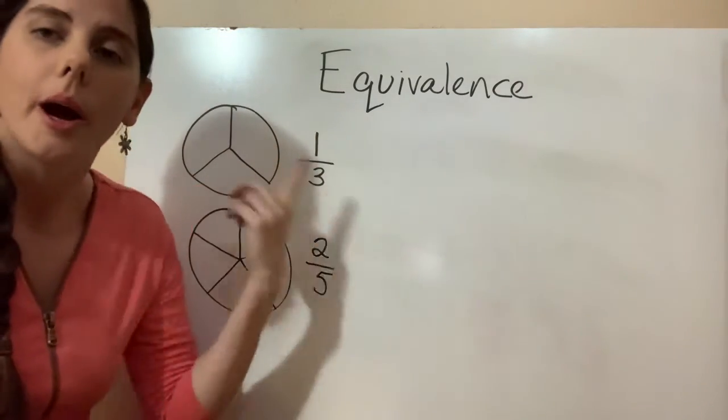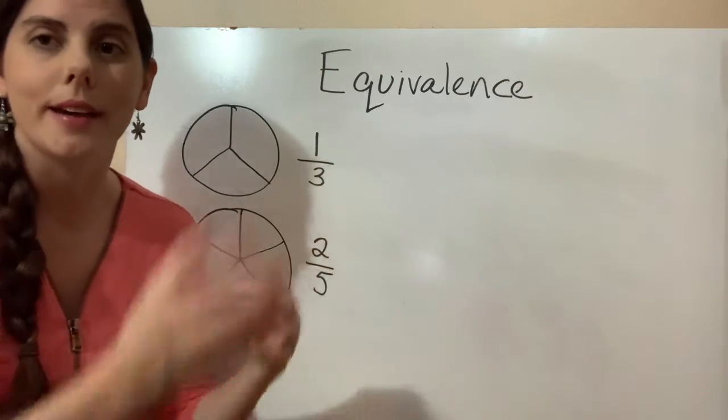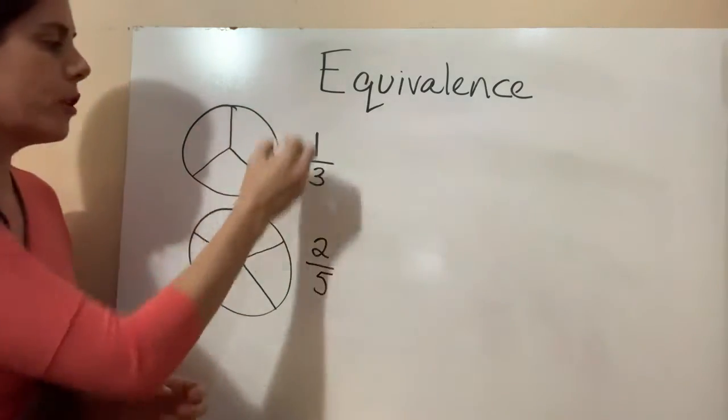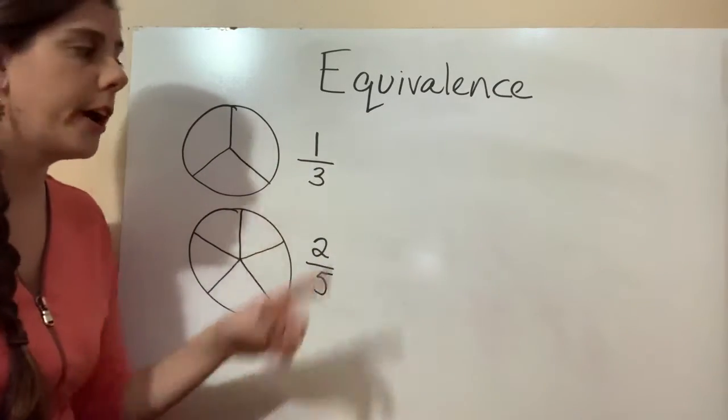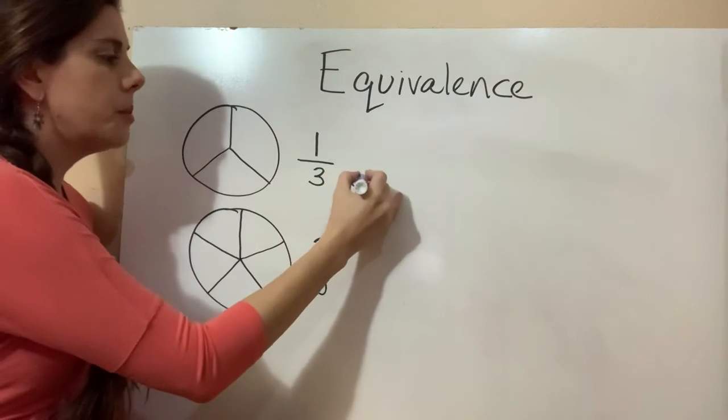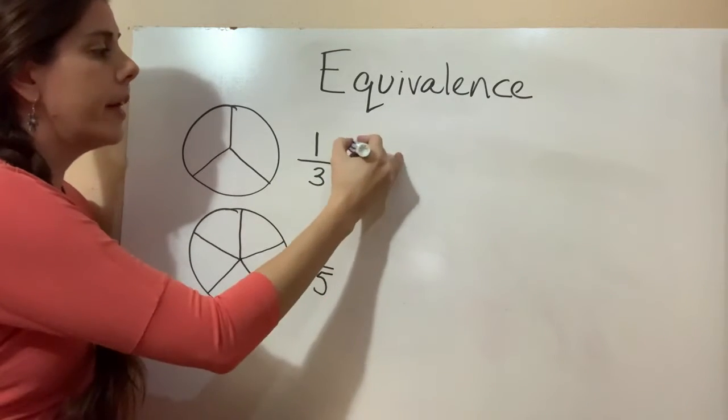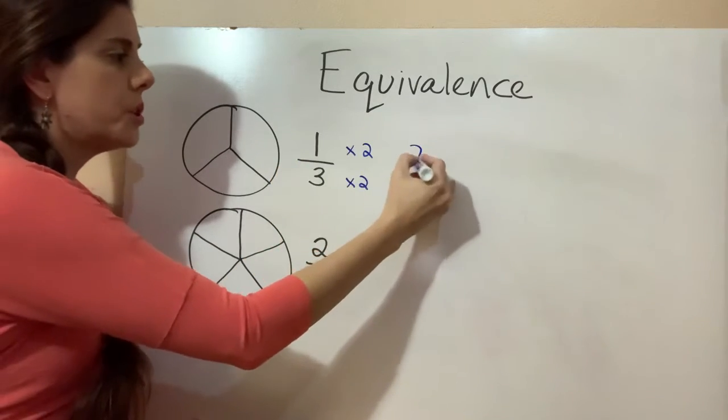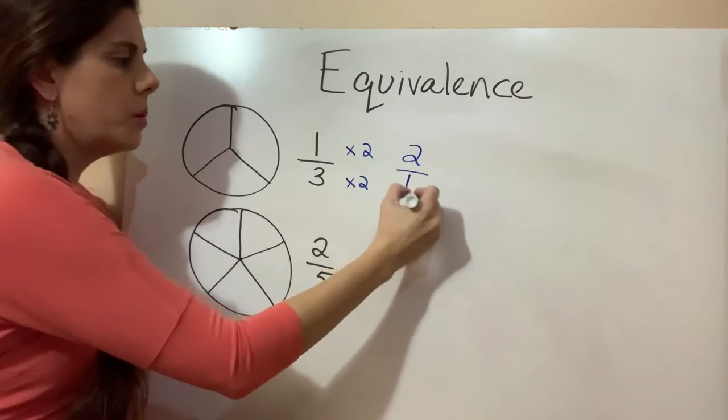I have our circle graphs here so we can visualize this a little bit. For our first one, we want to create an equivalent fraction of one third. So in order to do that, what I'm going to do is multiply the bottom by two and then multiply the top by two. So one times two equals two. Three times two equals six.